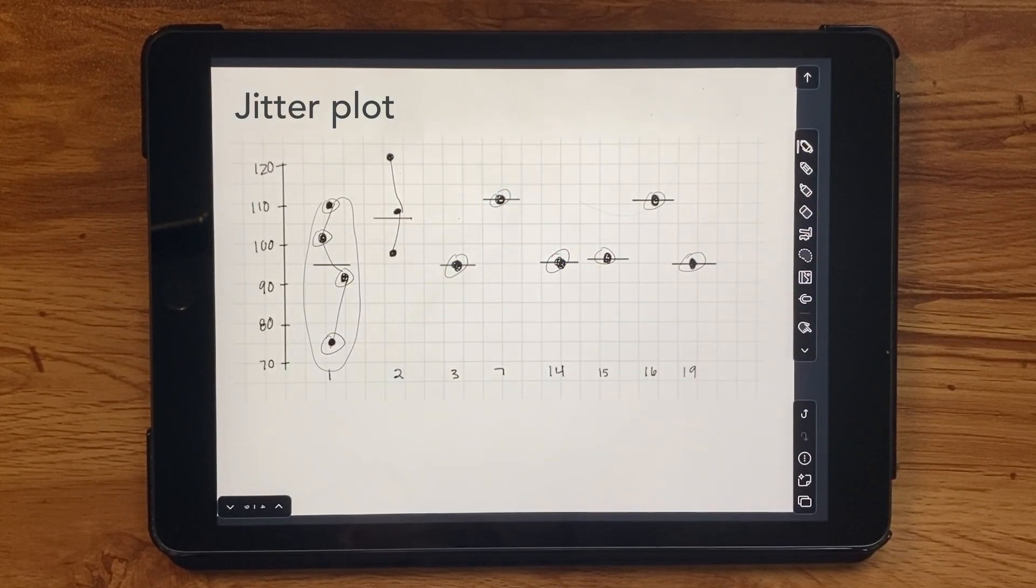This is a benefit to sketching first. I can experiment with novel approaches and decide if it's worth the effort to learn how to build. Ultimately, I concluded that the jitter plot was a viable option, if a little bit challenging to create. So I'm going to keep exploring and see if there's any other suitable chart types we can consider that might be a little bit easier to create.